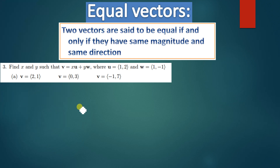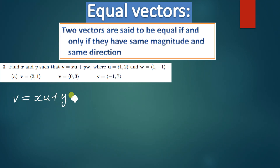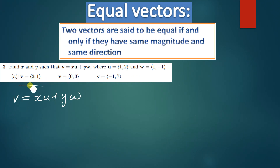So let's quickly look at this question here. Find x and y such that v is equal to x·u plus y·w. This is a very simple question. We've been given the values of u and w and also the values of v. I'm going to solve the first one and the second one — you solve the remaining ones and submit your solutions in case you want me to check them.